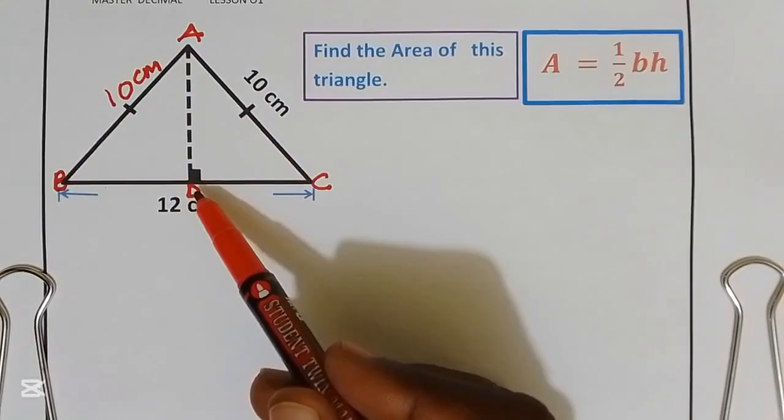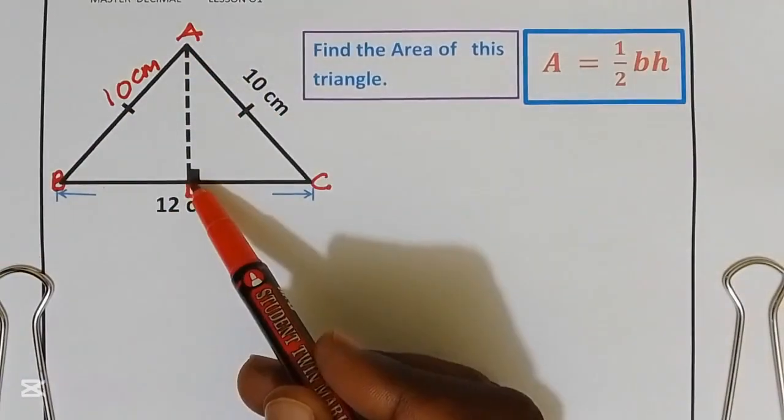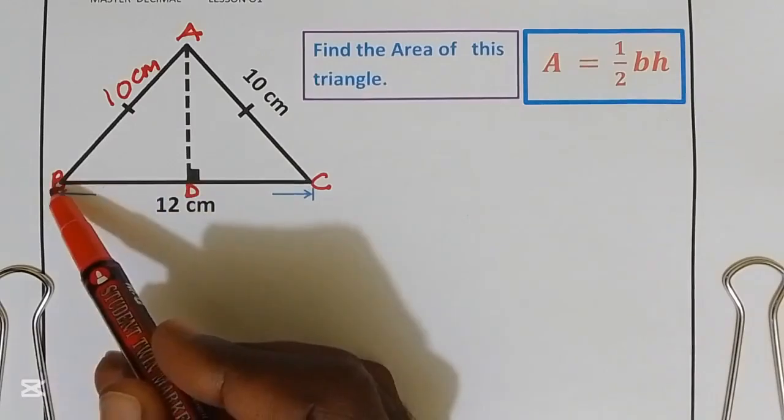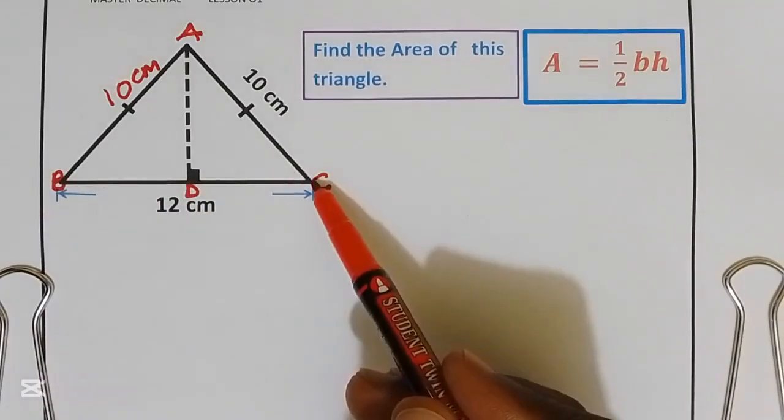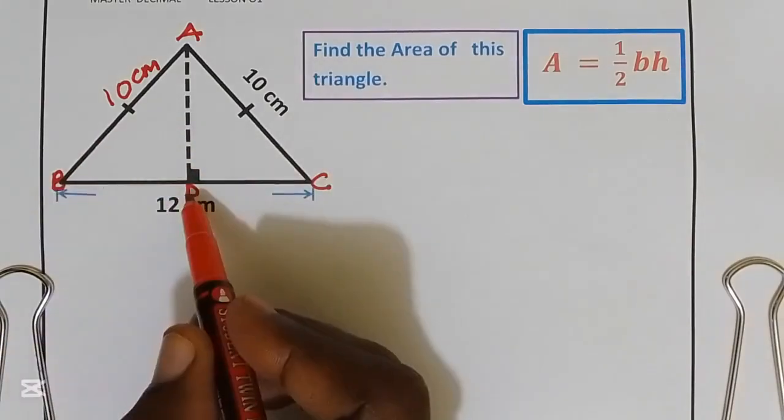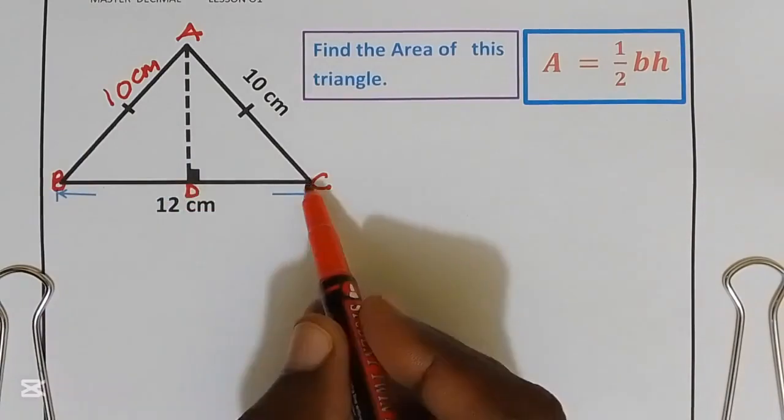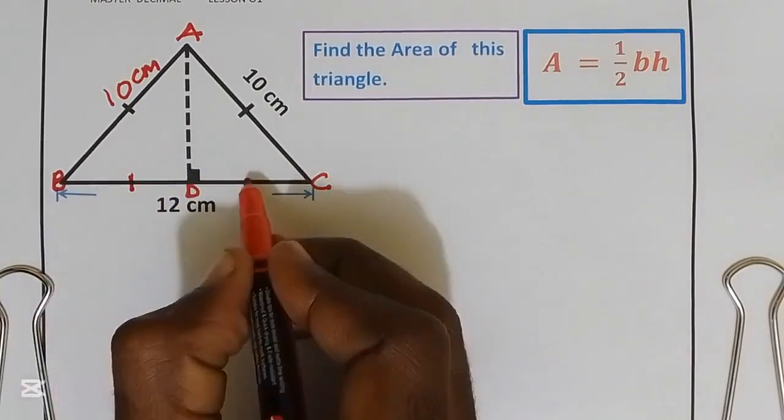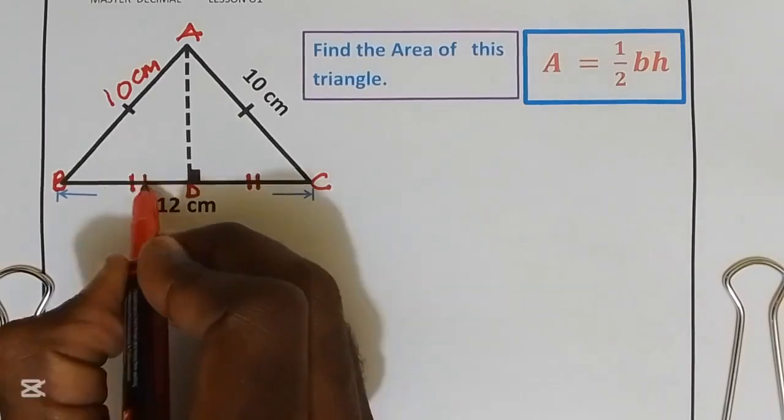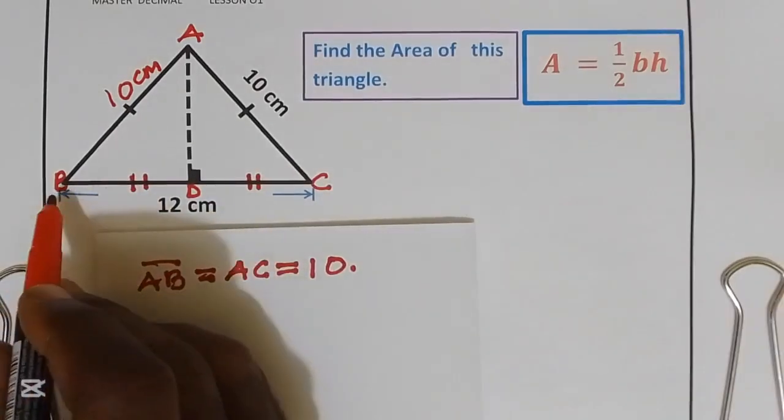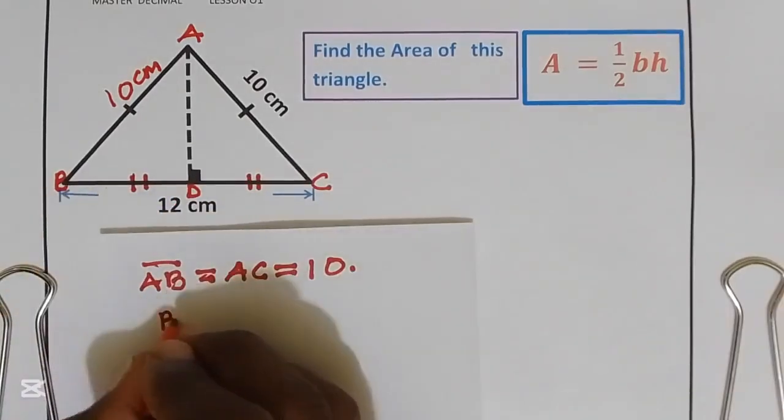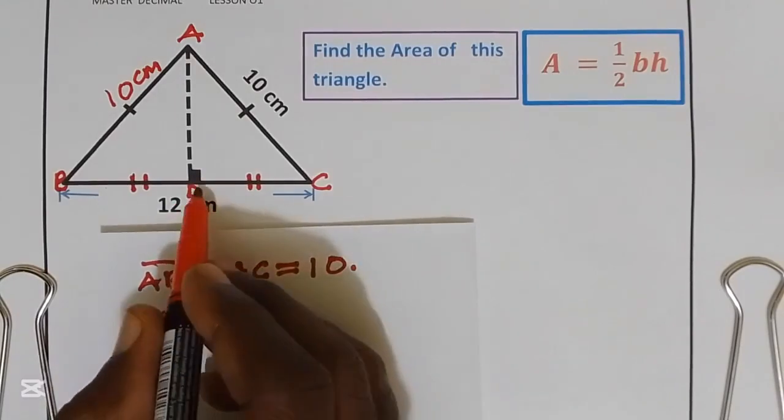Since the height AD partitions the base BC at the middle, distance BD is equal to distance DC. So these distances are also equal. Distance BD is equal to distance DC.